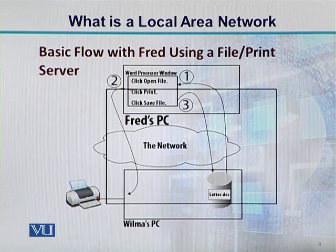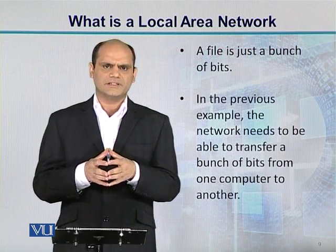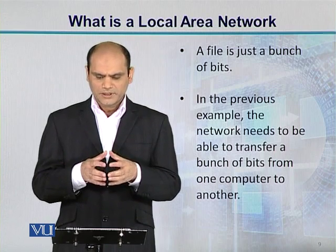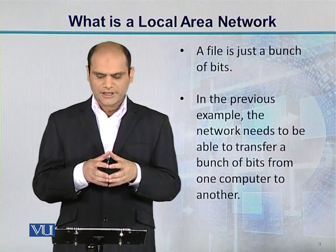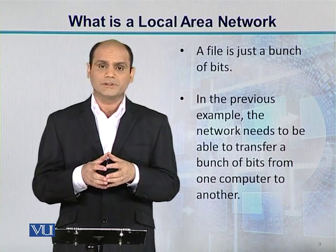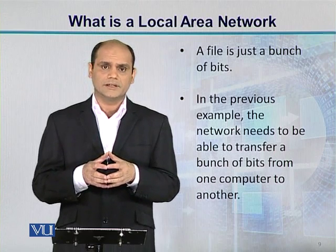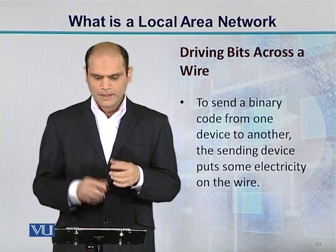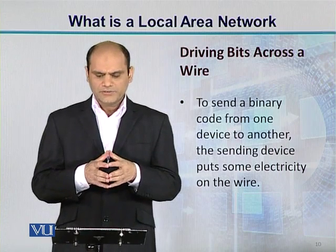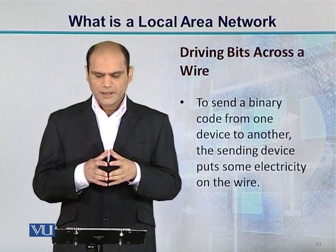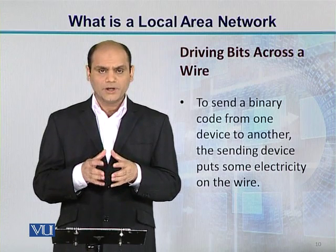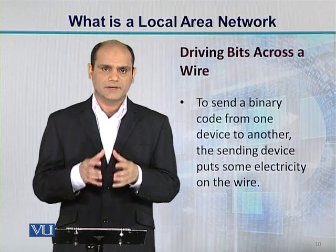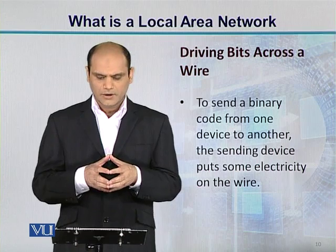A file is just a bunch of bits. In the previous example, the network needs to be able to transfer a bunch of bits from one computer to another — this is the capability the network should have. How can we drive bits across a wire? To send a binary code from one device to another, the sending device puts some electricity on the wire.